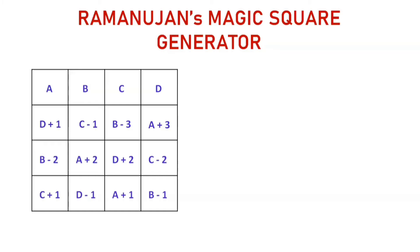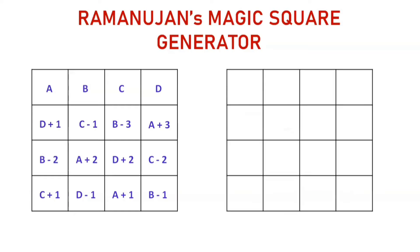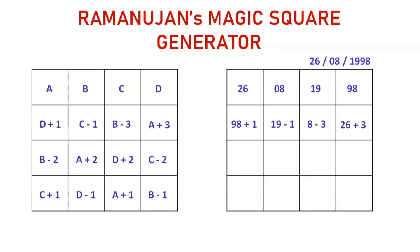Now let us take for example the date of birth as 26 August 1998. Fill the first row with these numbers and fill the remaining boxes using the formulas given before: D plus 1 means 98 plus 1, C minus 1 means 19 minus 1, B minus 3 means 8 minus 3, and A plus 3 means 26 plus 3, and so on.